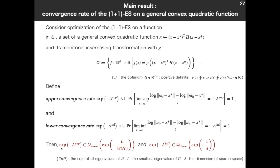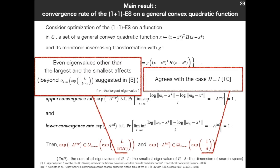Finally, this is our results. First, the upper-convergence rate is in this order: O(d → ∞) exp(-L/tr(H)). Trace of H is the sum of all eigenvalues of H. H is here, the Hessian matrix of convex quadratic function. And in addition, we show the order of lower-convergence rate: O(d → ∞) exp(-1/d). This is the dimension of the search space. So, we show even eigenvalues other than the largest and the smallest eigenvalues affects upper-convergence rate theoretically. This is the result beyond this order. This order is L/(U·d), which is suggested in the previous research. Our order of lower-convergence rate agrees with the case H is the identity matrix, which is analyzed in [10].